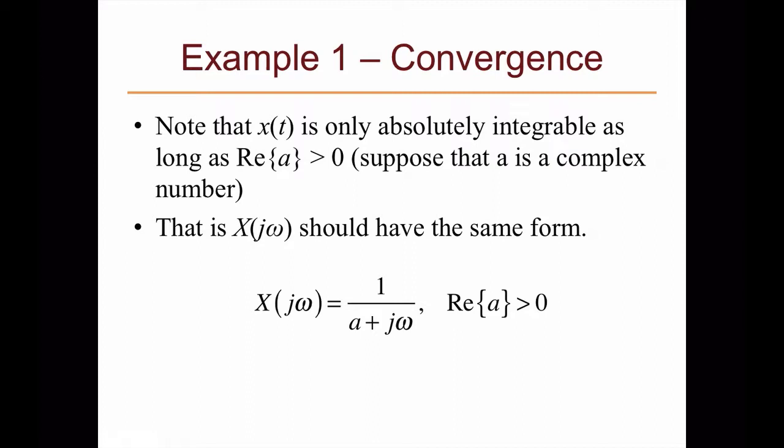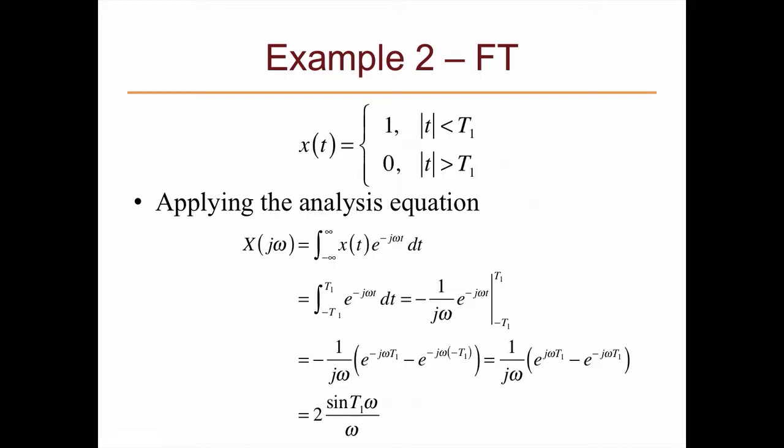Now suppose that a is not a real value. If a is complex, then for X(t) to be absolutely integrable, the real part of a must be greater than 0, meaning the exponent must have a negative scaling value. Still, X(jω) would have the same form as in the previous case.